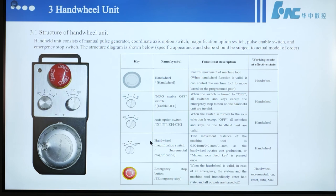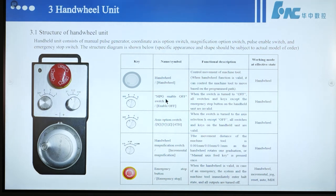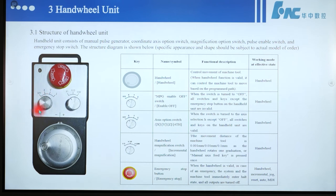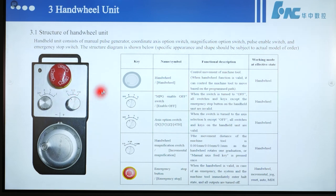Chapter 3: Handwheel Unit. Section 3.1, Structure of Handwheel Unit. The handwheel unit consists of a manual pulse generator, coordinate axis option switch, magnification option switch, path enable switch, and emergency stop switch. The structure diagram is shown below.